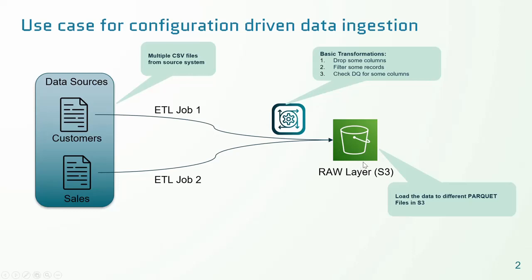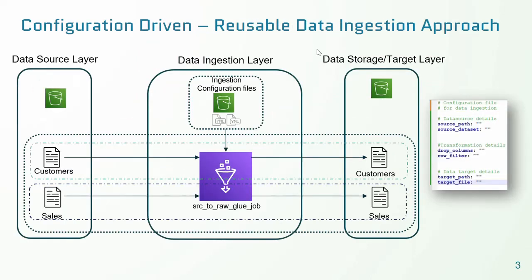Before the data gets loaded into the raw layer in S3, the straightforward method to load these individual files is by creating a Glue ETL job for each file. However, if you have a large number of files to be processed, it becomes an overhead to create that many jobs and maintenance becomes difficult. To overcome these difficulties, we can create a configuration-driven reusable Glue ETL job.